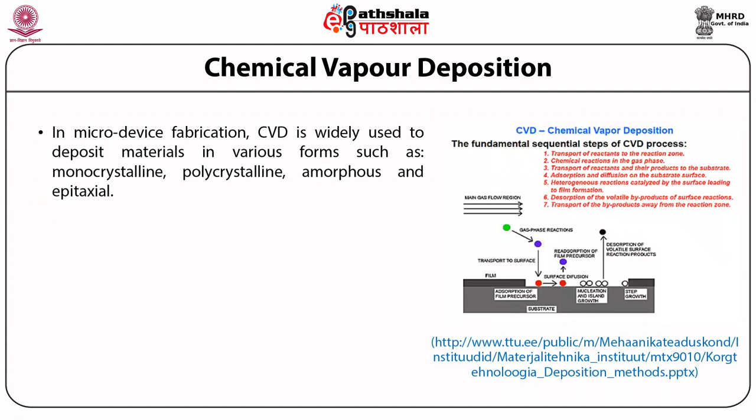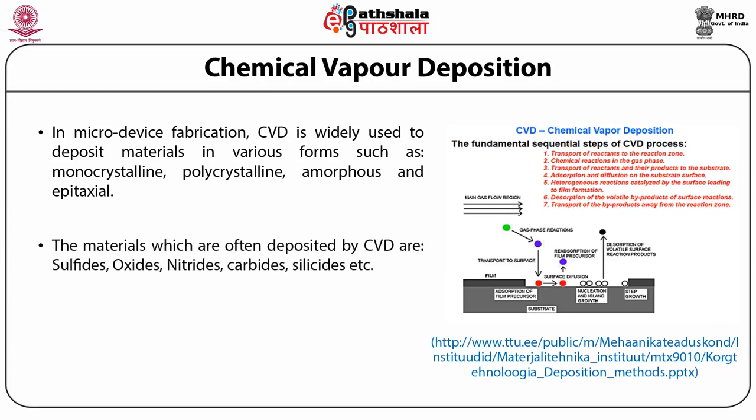CVD is widely used in micro device fabrication to deposit materials in various forms such as monocrystalline, polycrystalline, amorphous, and epitaxial. The materials which are often deposited by CVD include sulfides, oxides, nitrides, carbides, silicides, and others.